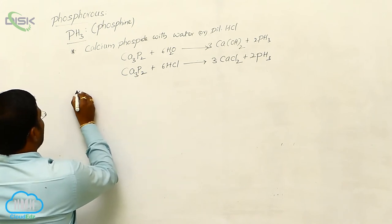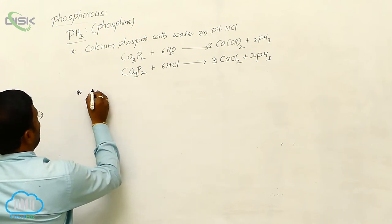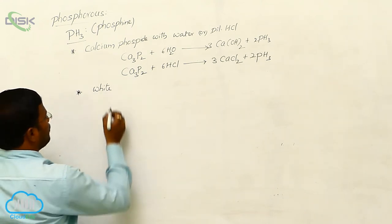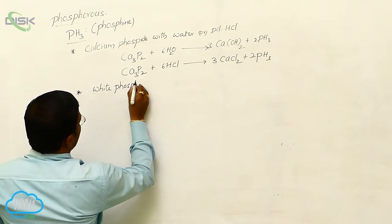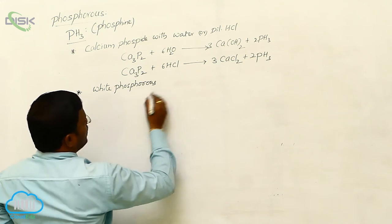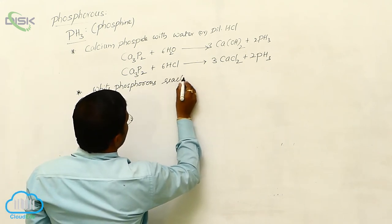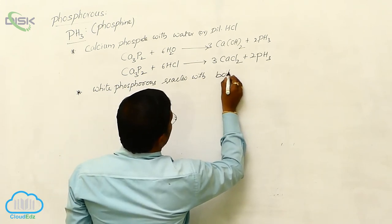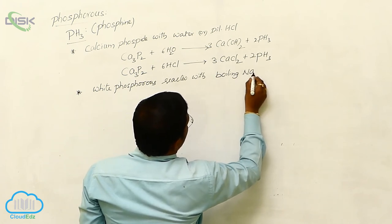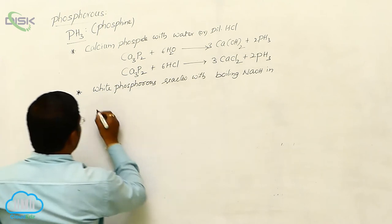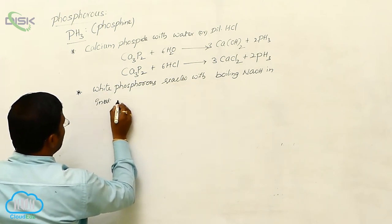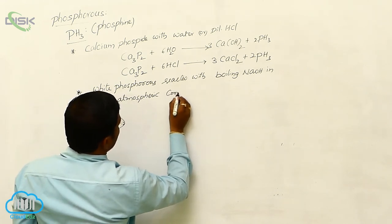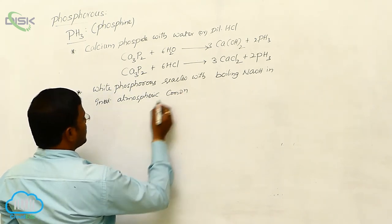And similarly, in one more manner of preparation, white phosphine is also produced in the laboratory from white phosphorus. White phosphorus when reacted with boiling sodium hydroxide in inert atmospheric conditions produces phosphine.